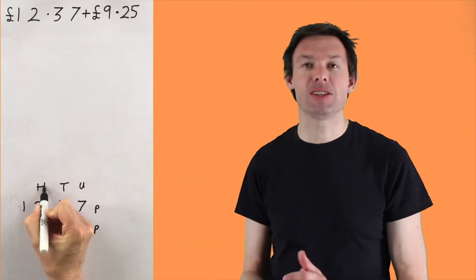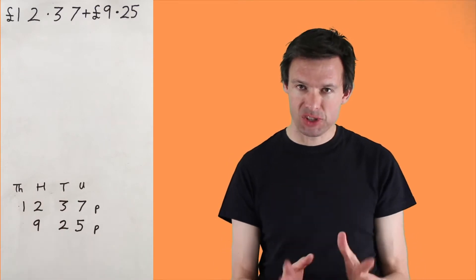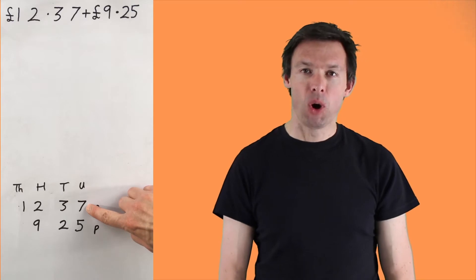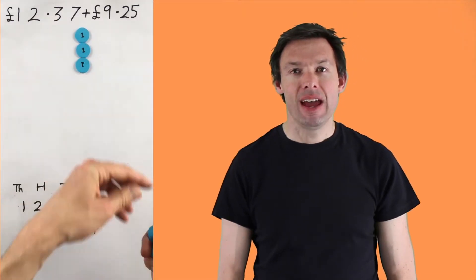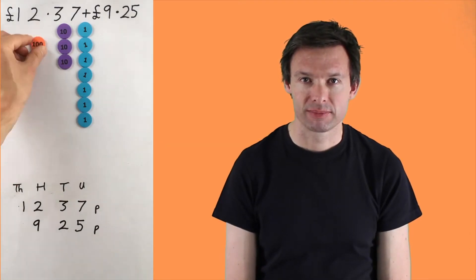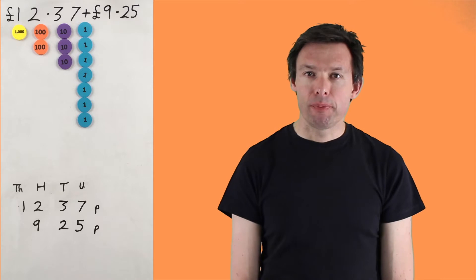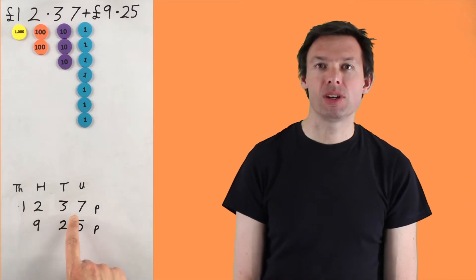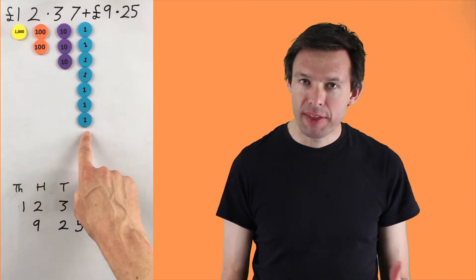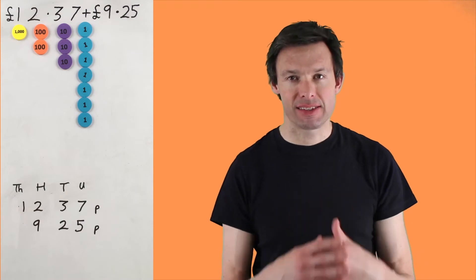We can add some column headings in as well. Let's add some ones, tens, hundreds and thousands so you can see where the digits go. And then the next thing you need to do is look at the first number, 1237 pence and we're going to make that number using place value discs. So we've made 1237 and we've done that by using 1 thousand coin, 2 hundred coins, 3 tens and 7 ones.